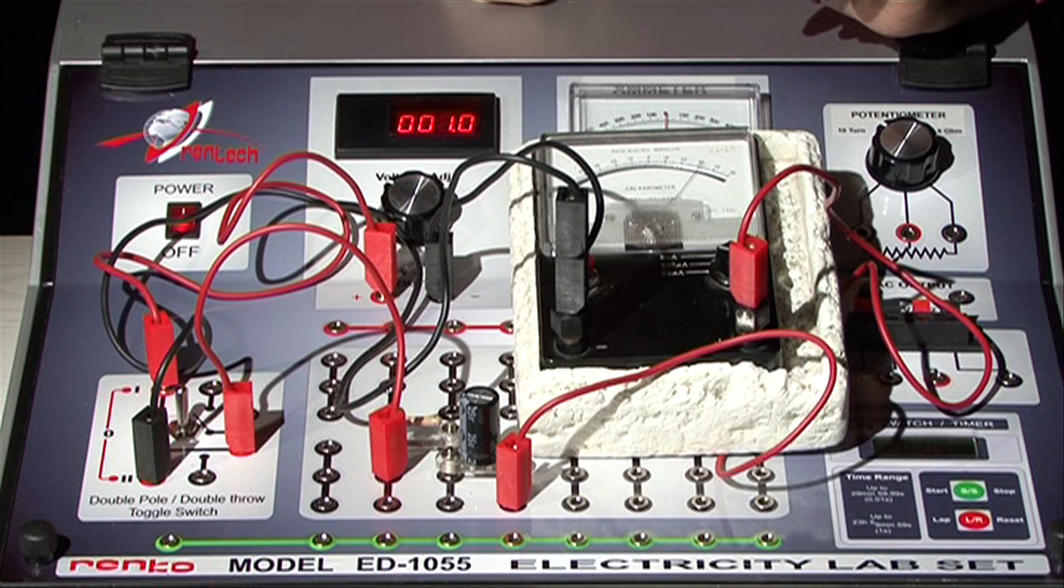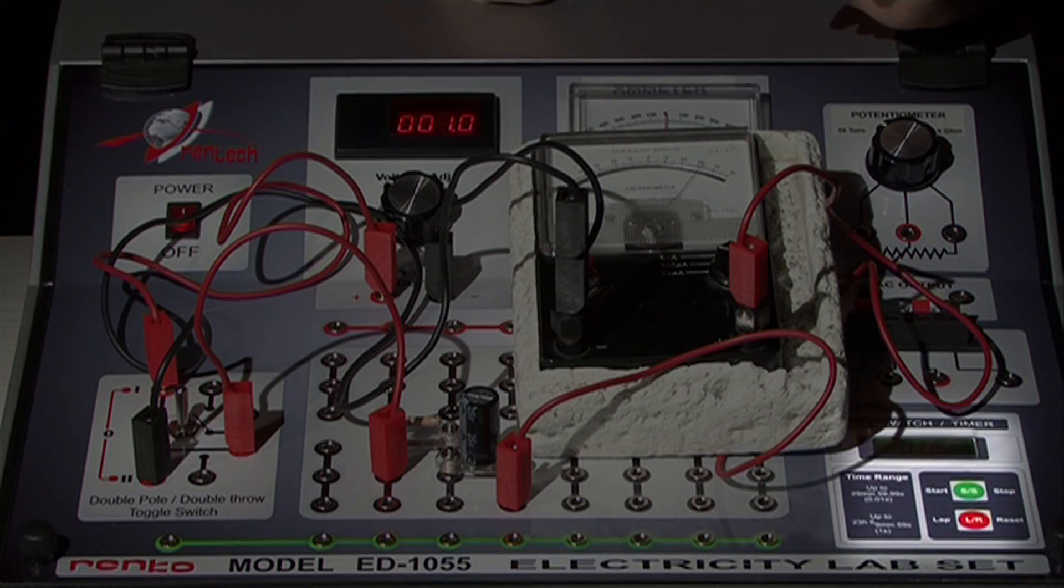During the experiment, you will record the time values corresponding to certain current values. For this purpose, the red button of the chronometer will be used.